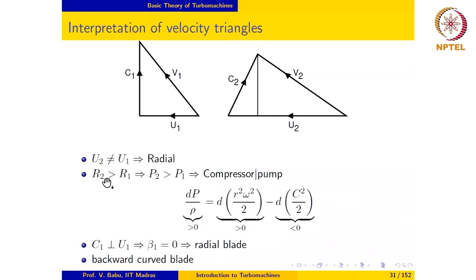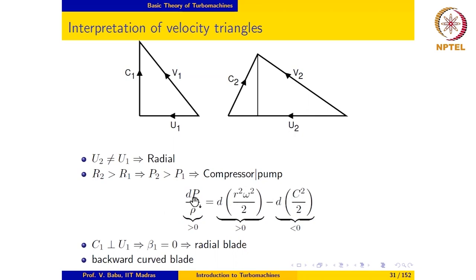Next, since R2 is greater than R1, DR is positive. And judging by the magnitude of the relative velocity from inlet to outlet, we can see that C2 is less than C1, which means DC is negative, and so this term contributes positively to the overall right-hand side. DR is positive and DC is negative, so both these things together give rise to DP being positive in this case, which means that P2 is greater than P1. So this corresponds to the rotor of a compressor or a pump.